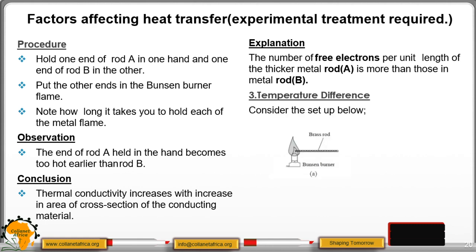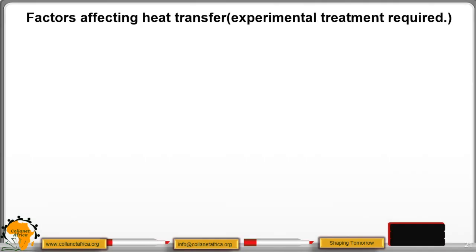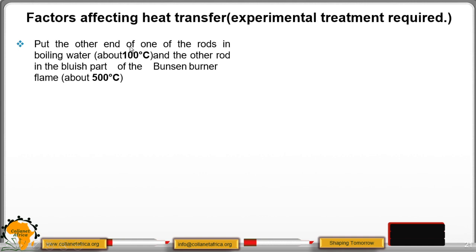Factor three is the temperature difference. We consider two brass rods of the same thickness and same length. One is heated using a Bunsen burner flame, the other using boiling water. Procedure: hold one end of each rod in your hand, then put the other end of one rod in boiling water — about 100 degrees Celsius — and the other on the Bunsen burner flame, which is about 500 degrees Celsius.